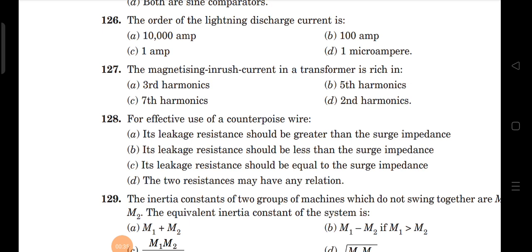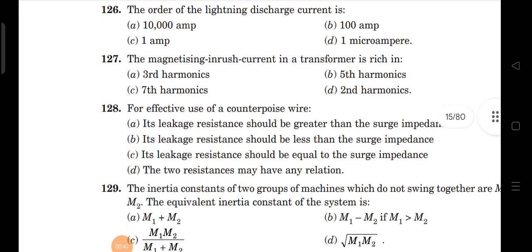Next question: the magnetizing inrush current in a transformer. In the case of transformers, magnetizing inrush currents are rich in second harmonics only. To reduce these magnetizing inrush currents, a second harmonic restraining relay is used. So the answer is second harmonic — option D is correct.